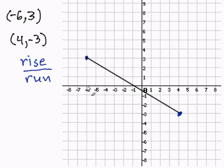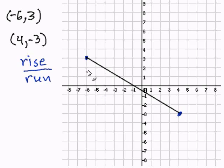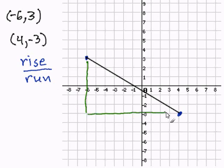Rise represents the vertical distance that you travel to get from one point to the next, and run is the horizontal distance. We always travel from the left point to the right point. So let's start with rise — rise is the vertical distance, so we have to travel down. And run is the horizontal distance, so we travel to the right.